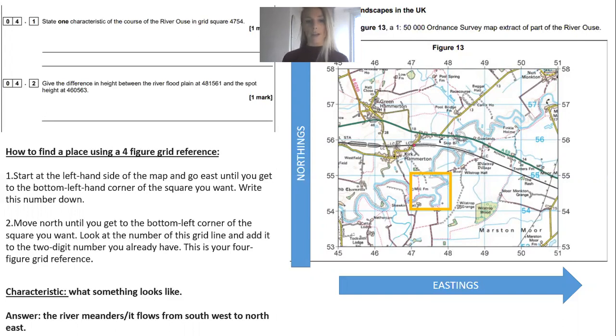First thing I'm going to go over is how to work out a four-figure grid reference. 4754 needs to be separated into two sets of numbers. The first set, 47, are your eastings. The second set, 54, are your northings. So you go along the corridor to 47, then stop, then up the stairs to 54 and stop. That brings you to the bottom left corner of the box you're interested in. This is the grid square the exam question is referring to.